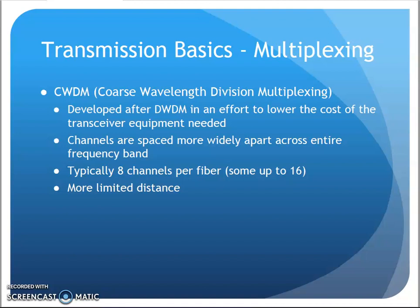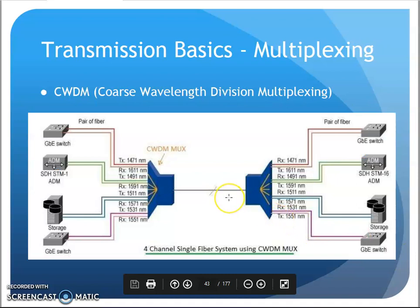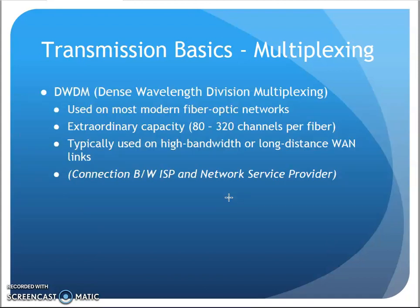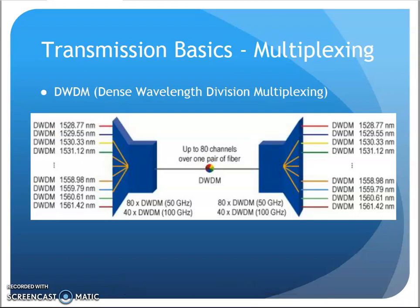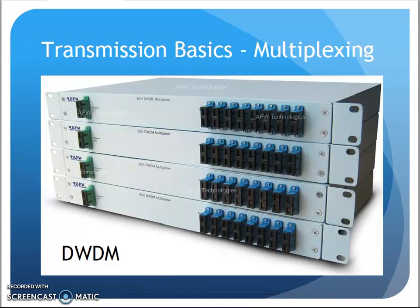There are different types of wavelength division multiplexing: coarse and dense. Coarse has up to around 18 channels but is limited in distance — it can connect across a campus. Dense wavelength division multiplexing can get up to around 300 channels, used between ISPs or network service providers — a couple hundred signals per fiber. The nanometer measurements shown represent the wavelengths of light, with wavelength after wavelength used to represent different signals.